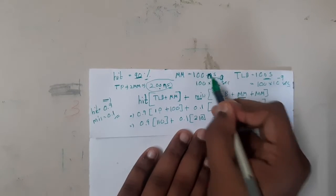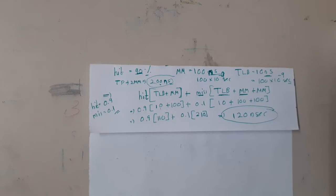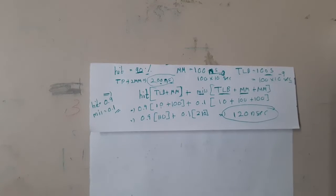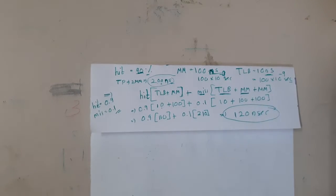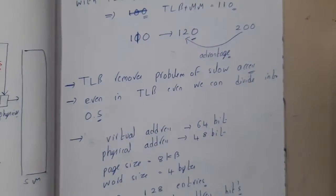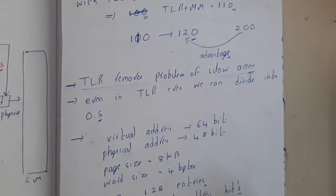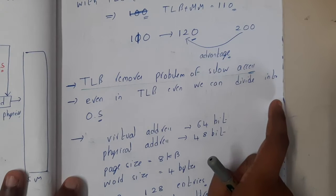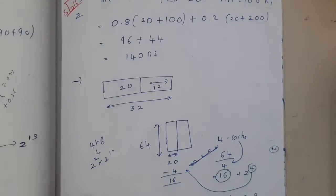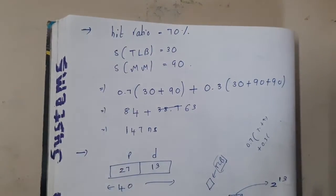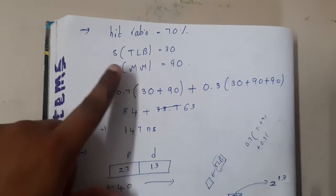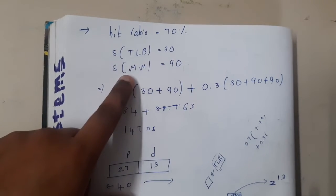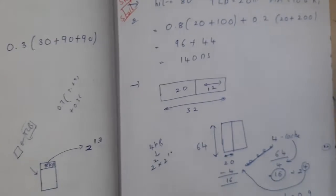So we can see TLB is really fast compared to traditional paging. There are around 5 to 10 questions from this topic in previous year papers, so you can understand its importance. TLB resolves the speed problem with paging. Now let us move to the second issue — internal fragmentation.